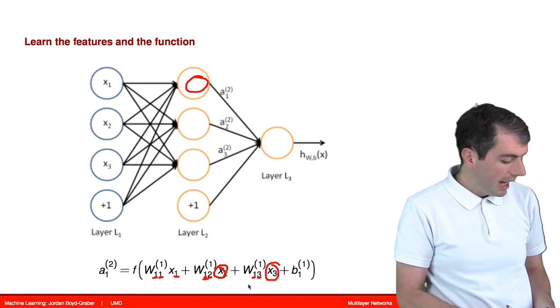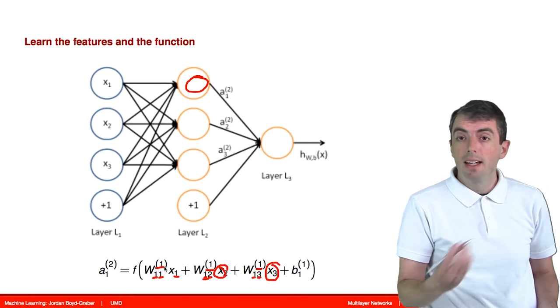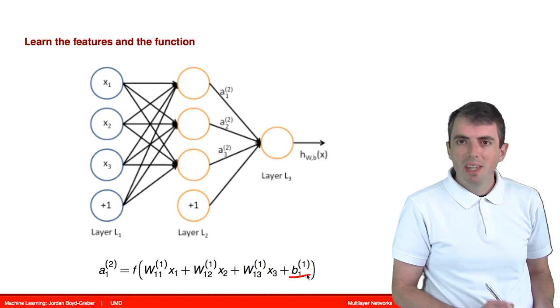w13 is going to be used with the third feature in the first hidden node. And the superscript 1 says that this is operating on the input layer that you get directly from your data. You then add to all of that a bias term specific for that hidden node.